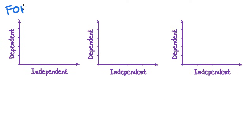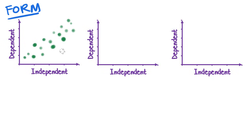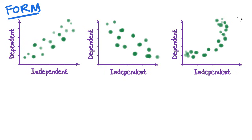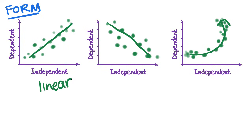Let's look at form. Form is about whether the shape follows a linear pattern. If you have dots that are generally following a fairly straight-line pattern, that's linear. Dots going generally straight down the page or straight up the page are also linear. A positive straight-line pattern is positive linear, and a negative straight-line pattern is negative linear — but both are linear.